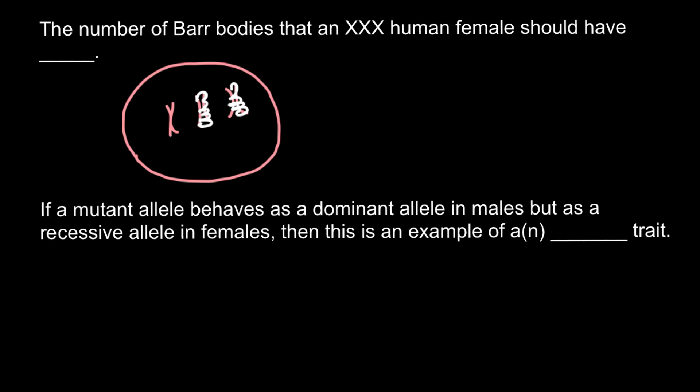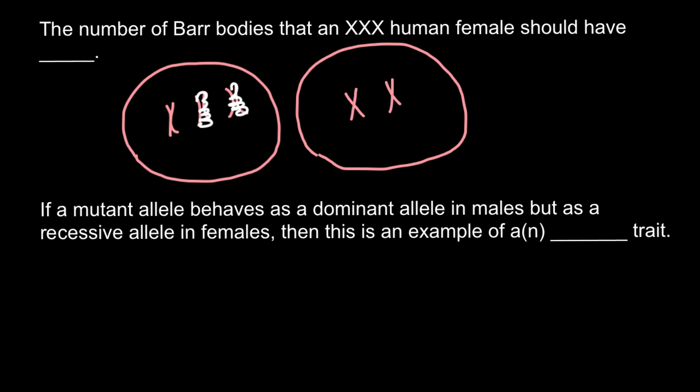For example, if we consider a different example where we would have just two X chromosomes, one of the X chromosomes would also be inactivated and we would have only one Barr body. But there are other examples as well.